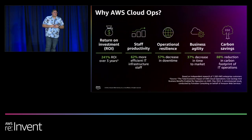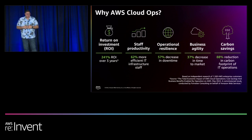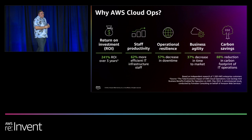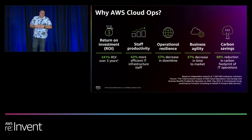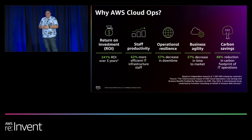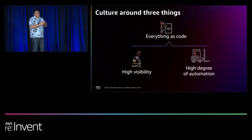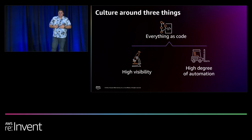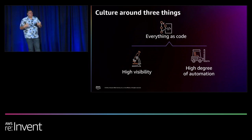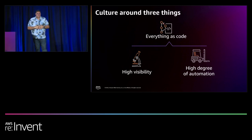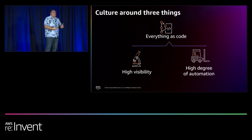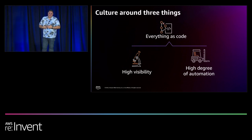This CloudOps model is based on independent research of 1,500 AWS customers, showing a return on investment of 241% over three years, a staff productivity increase of 62%, and carbon savings of 88% by coming to the cloud. Bringing this back to our session, it comes down to building a culture around three things: everything should be codified, having visibility into the security and performance of your environment and workloads, and automating and responding — not only on a provisioning standpoint, but also responding to incidents inside of your organization.